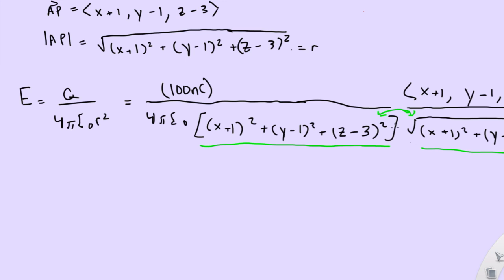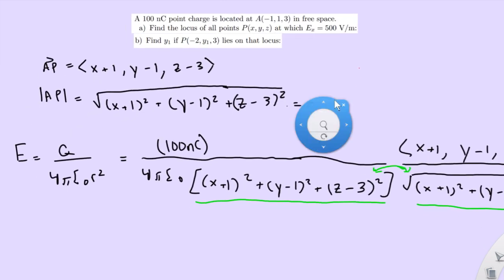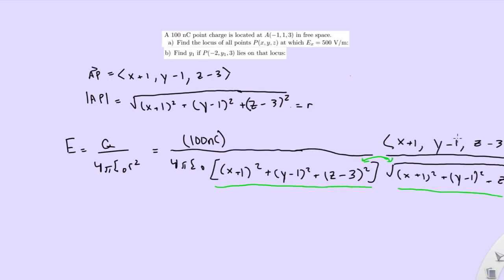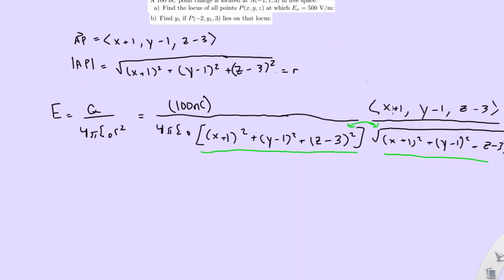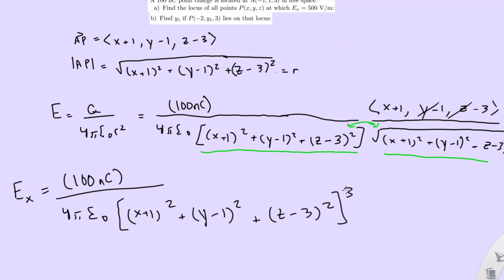But also, notice that the problem is asking for the x-component. So we don't really need to worry about the y and z. We could effectively just cross these things out and not even worry about them. So Ex would then equal—still have our 100 nanoCoulombs, 4πε₀, still have that. Now this term is going to be to the 3 halves because we're combining the two. Let me make this a bracket: x plus 1 squared plus y minus 1 squared plus z minus 3 squared, this is going to be to the 3 halves.